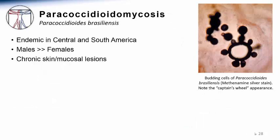A very distinct fungal infection, not seen in the United States but seen in Central America and South America, is paracoccidioidomycosis, caused by the fungus Paracoccidioides brasiliensis. There is a significant increase in incidence in males, with males being more than 15 times more likely than females to be infected, perhaps related to cultural differences in exposure and who actually works the land in these cultures. They can also form very disfiguring skin and mucosal lesions. When biopsied, the fungus forms a very characteristic round form that is often noted as a captain's wheel or a ship's steering wheel fungal form.